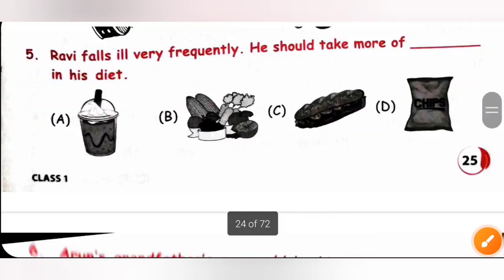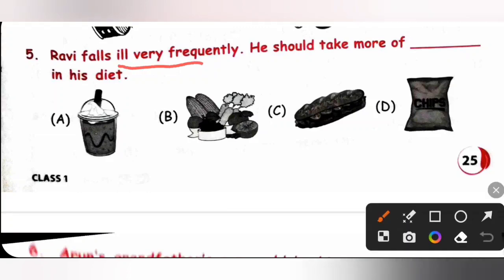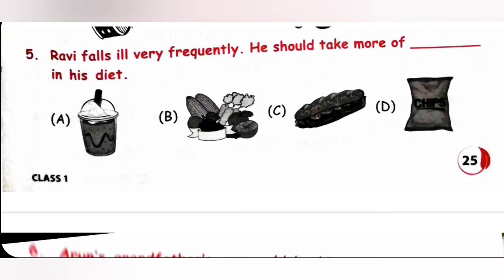Fifth one. Ravi falls ill very frequently. He should take more of dash in his diet. So, if he falls ill very frequently, he should take more of protective food. Protective foods are rich in vitamins and minerals. So, fruits and vegetables are protective food. They increase the body's ability to fight germs and diseases. So, option B. He should take more of protective food in his diet. So, option B is the correct answer.